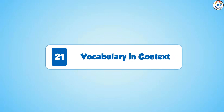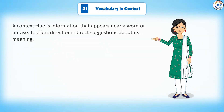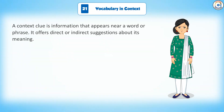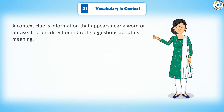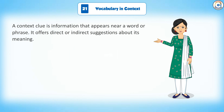Chapter 21: Vocabulary in Context. A context clue is information that appears near a word or phrase. It offers direct or indirect suggestions about its meaning.